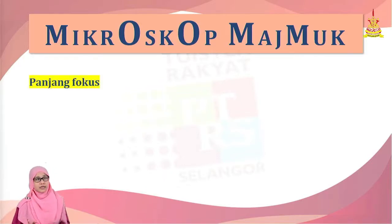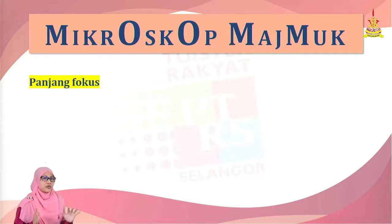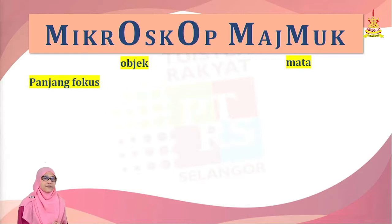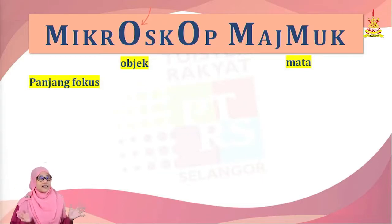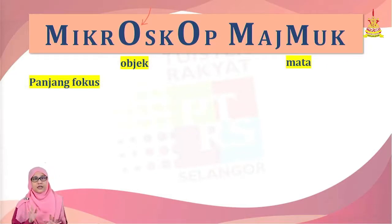Ciri-ciri yang pertama adalah panjang fokus. Kita lihat bagaimana panjang fokus bagi kanta objek dan juga kanta mata. Kita ada dua kanta cembung — satu diletakkan dekat mata, kita panggil itu kanta mata, dan satu lagi adalah kanta objek, di mana kita letakkan di sebelah objek. O adalah untuk kanta objek dan M adalah untuk kanta mata.